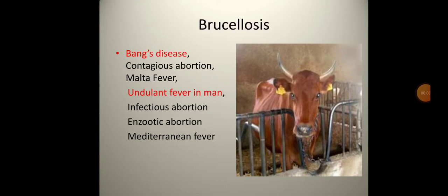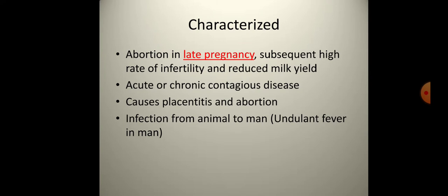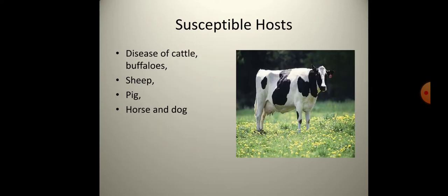Brucellosis, also known as Bang's disease, contagious abortion, and Malta fever, is also referred to as undulant fever in men. Infection causes abortion, epizootic abortion, and Mediterranean fever. In brucellosis, abortion occurs in the last trimester of pregnancy, with subsequent high rates of infertility and reduced milk yield. It is an acute or chronic contagious disease causing placentitis and abortion. Transmission from animal to man causes undulant fever.